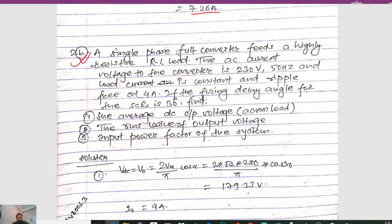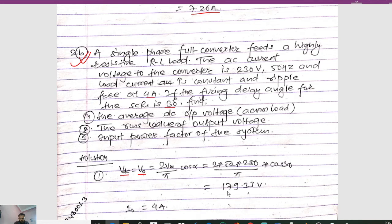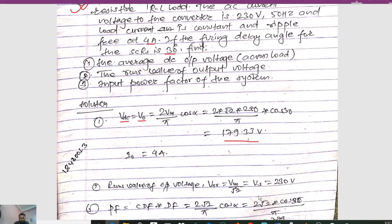The next numerical: a single-phase full converter feeds a highly inductive R-L load. The AC input voltage is 230V, 50Hz. The load current is constant and ripple-free at 4A. The firing delay angle alpha = 30°. Find the average DC output voltage, the RMS value of output voltage, and the input power factor. The average DC voltage VDC = 2Vm/π × cos(alpha) = 2 × (√2 × 230)/π × cos(30°) = 179.33 V. The output current is 4 A.